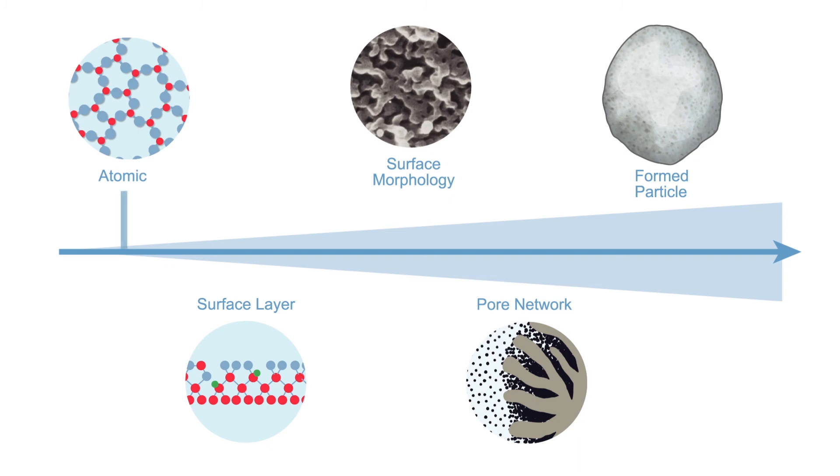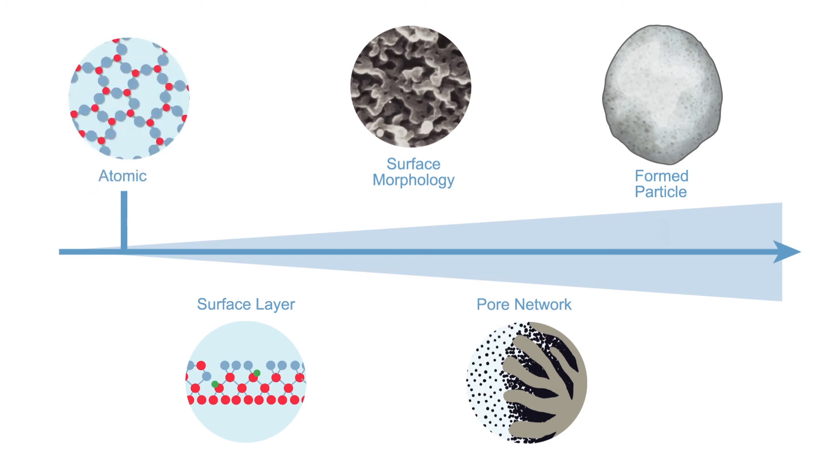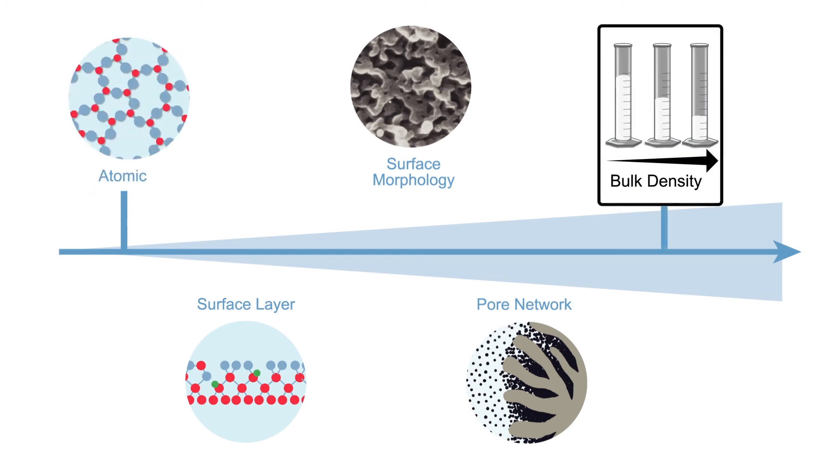At one end, there is the atomic scale that dictates important characteristics such as impurities within individual particles. At the macro scale, there are bulk properties such as density that affect interactions with other excipients and active ingredients during processing.